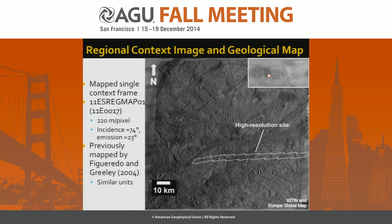This is the regional context image. I've highlighted where we're going to be looking at the high resolution images. For the regional context, it's a single frame out of the E11 orbit of Galileo, at 220 meters per pixel, at a high incidence angle of 74 degrees and a low emission angle of 23 degrees. This tells us it's going to highlight structure over albedo, which will come into play when we talk about the high resolution images.